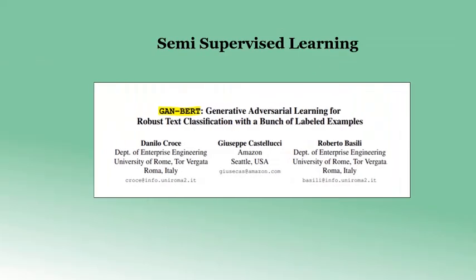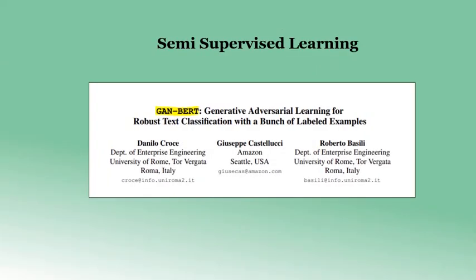In this demo, we will adapt semi-supervised learning to fine-tune the BERT model with a vast number of unlabeled examples. We would like to acknowledge the authors of the paper GAN-BERT: Generative Adversarial Learning for Robust Text Classification, for suggesting this efficient approach for classifying textual data with a small number of annotated examples.